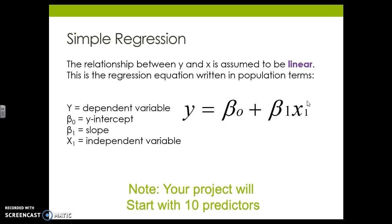If you are in my Info 2020 class, your project will start with 10 predictors. So make sure that we have a good understanding of simple regression before we start adding all the crazy interactions.